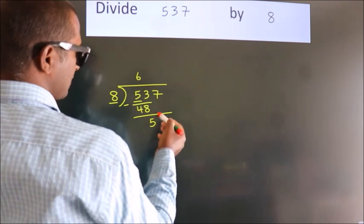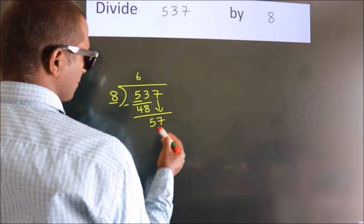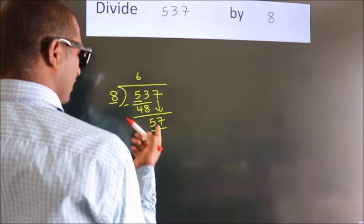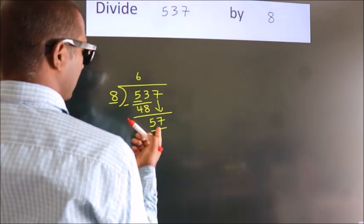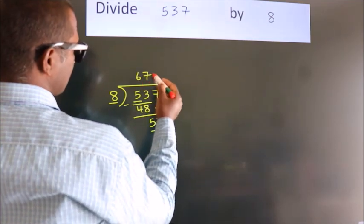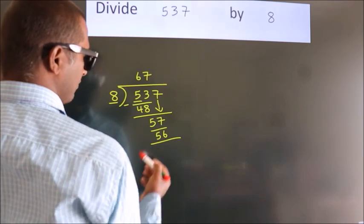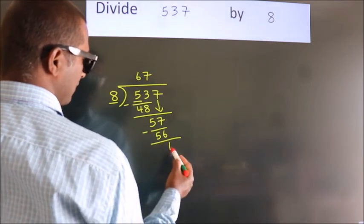After this, bring down the beside number. So, 7 down. So, 57. A number close to 57 in the 8 table is 8 times 7 equals 56. Now we subtract. We get 1.